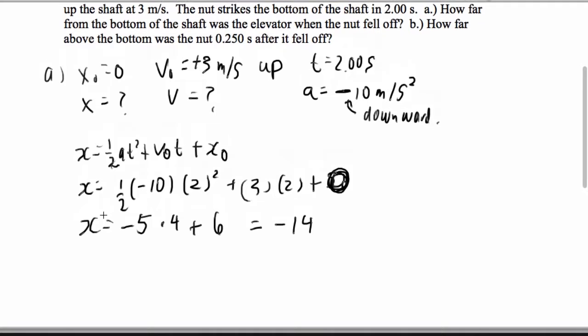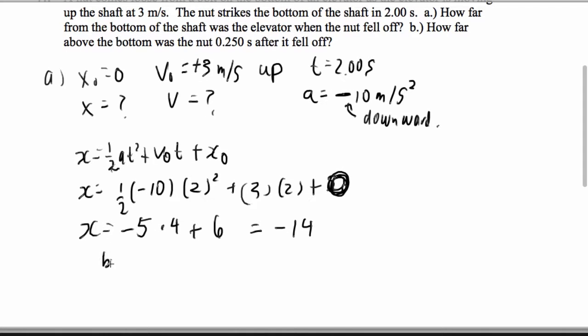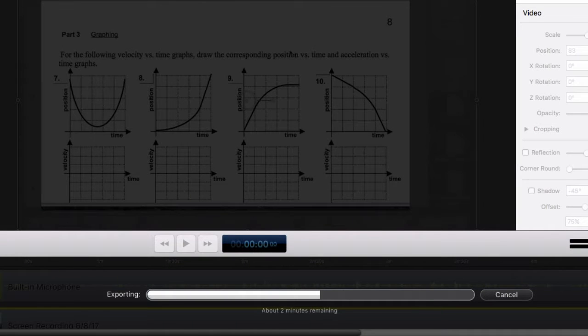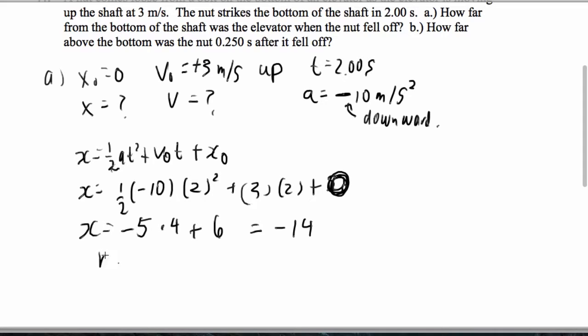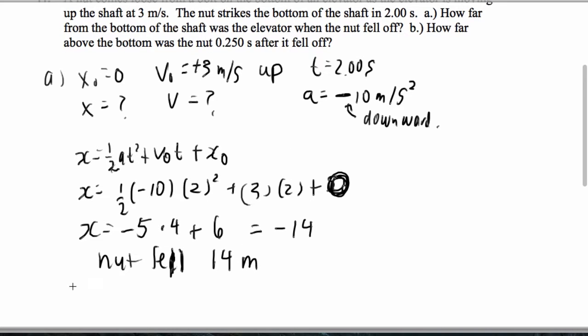So x is negative 14. So in other words, the bolt, the nut fell, whoops, the nut fell 14 meters. And that's part A.